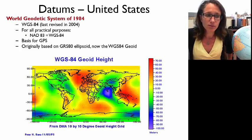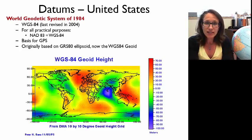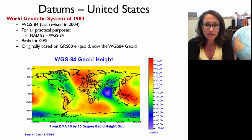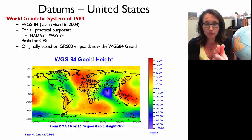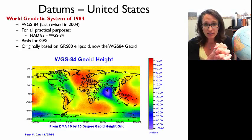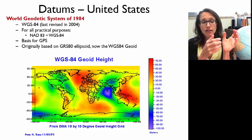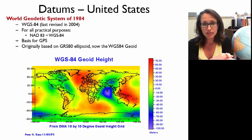The third datum used in the US — and actually a global datum — is the WGS datum of 1984, which has been more recently revised. For practical purposes, the NAD 83 datum and the WGS 84 datum are essentially equivalent for use in the United States and North America. The WGS 84 datum is the basis for GPS data, and the raw data in your GPS unit are stored referenced to the WGS 84 datum.